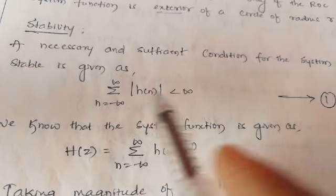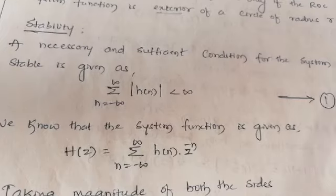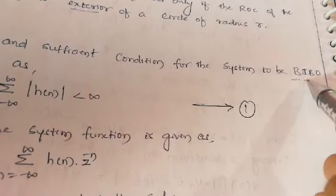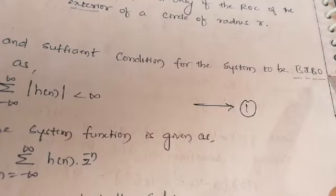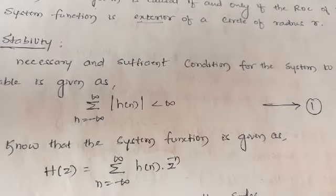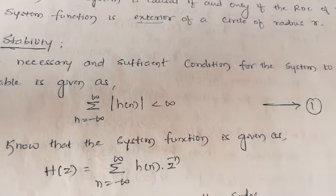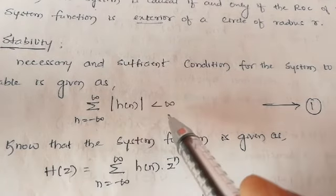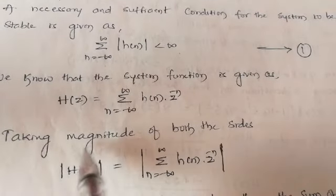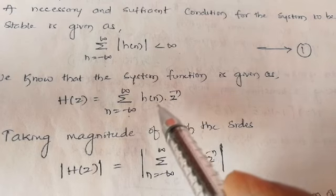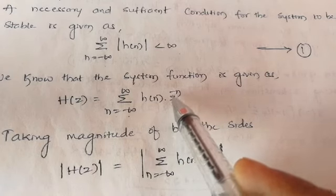Next case: stability. The necessary condition for a system to be stable is that it must follow BIBO — Bounded Input Bounded Output. The condition for BIBO stability is: summation from n equal to minus infinity to plus infinity of |H(n)| must be less than infinity. We know that the system function is given as H(z) equal to summation from n equal to minus infinity to plus infinity of H(n) multiplied by Z to the power minus n.